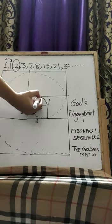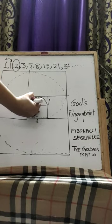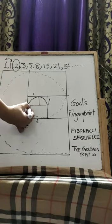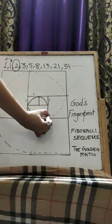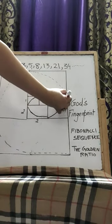We just draw an arc. Go to the next square, draw an arc and go to the next one, draw an arc. Go to the next one, draw an arc.